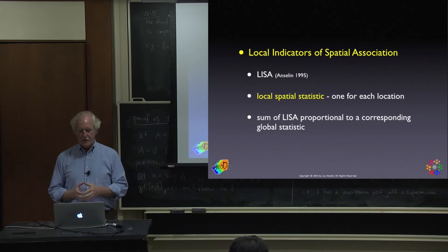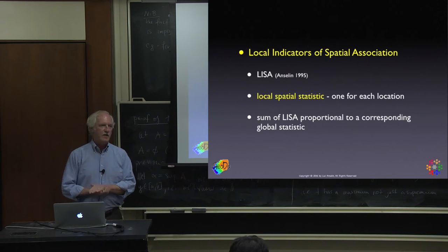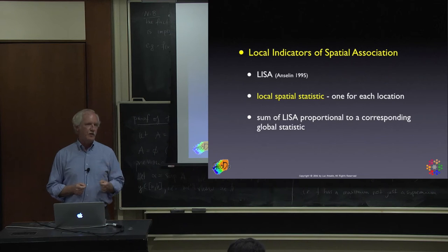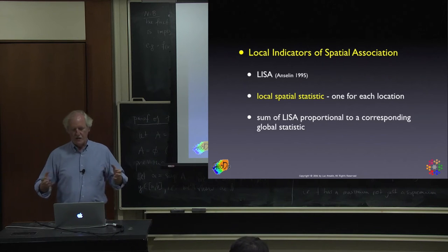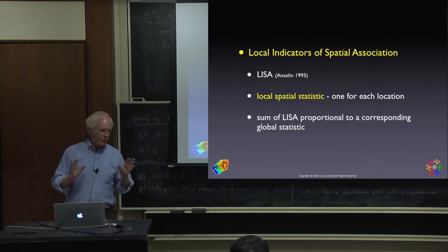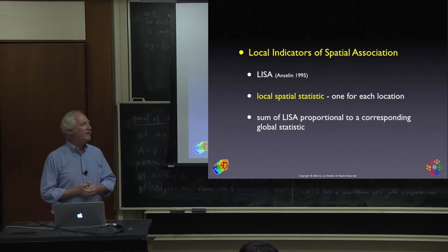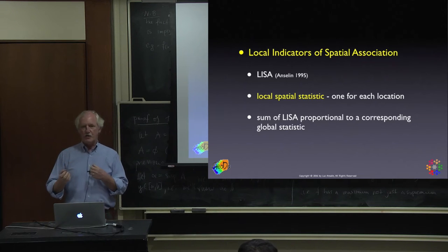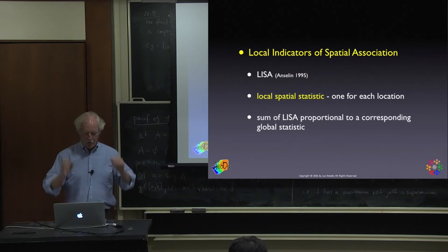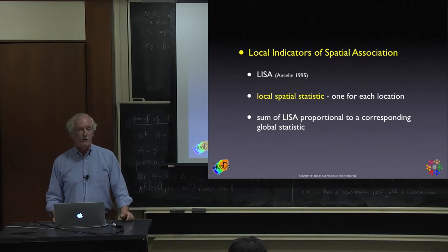The idea behind LISA statistics is twofold. One is that it's a local statistic — you have a statistic for each location, which is basically what cluster detection is about. The other is a connection between a local statistic and a global statistic through very simple algebra. Once you see it, the light bulb should go off — it makes a lot of sense.